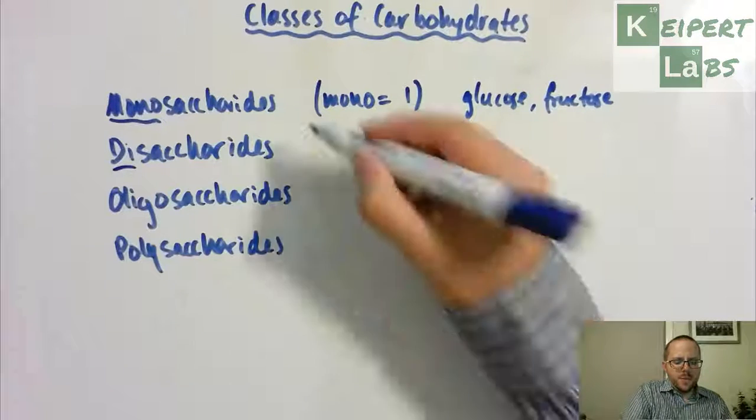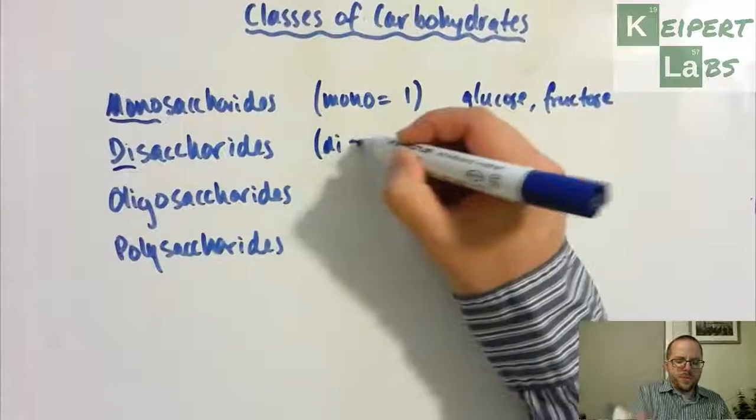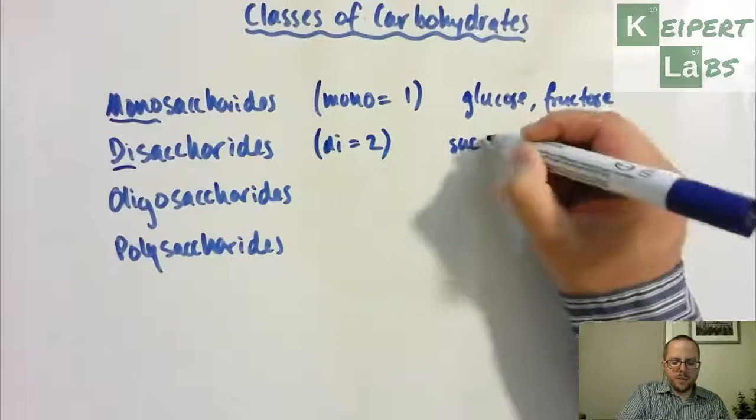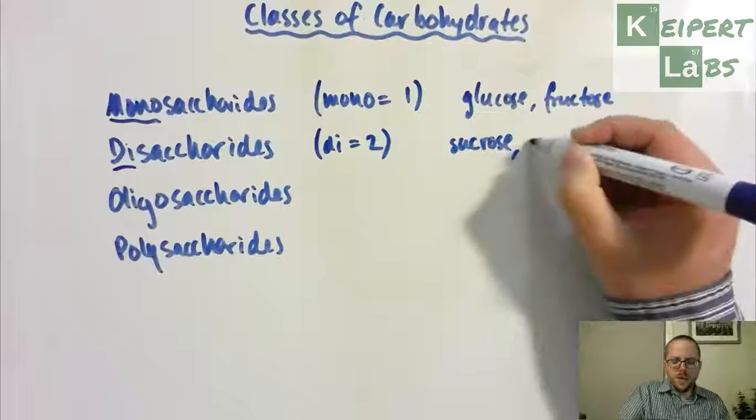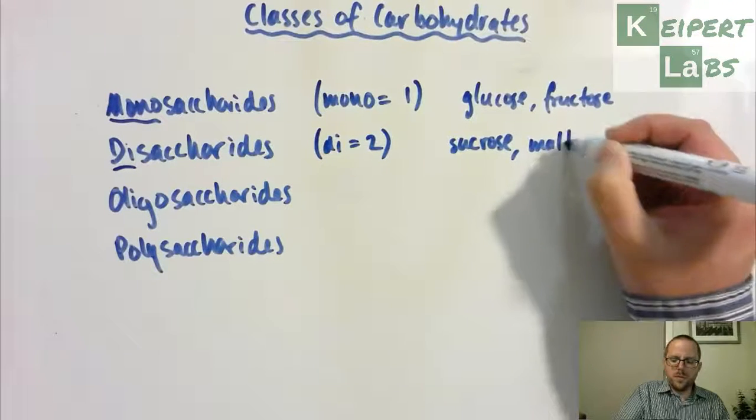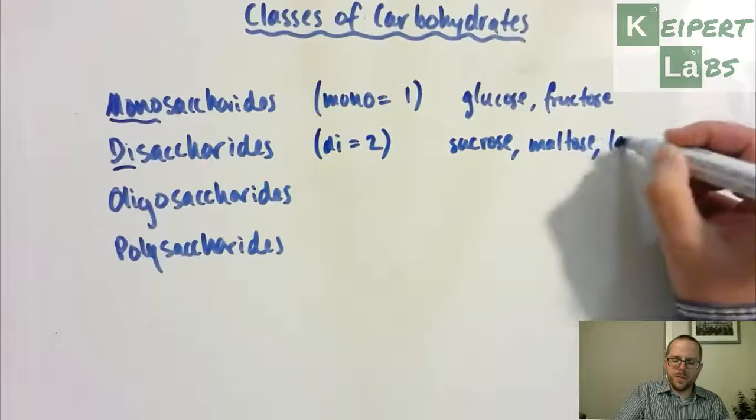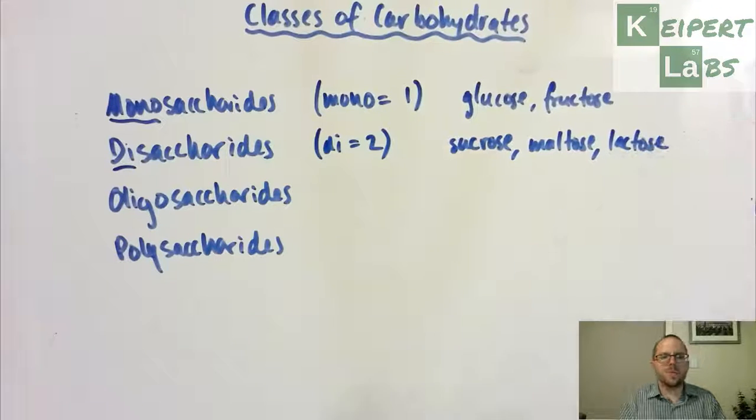Disaccharides, as the name would suggest, di refers to two. Examples include sucrose, maltose, and lactose. Disaccharides are where we take two monosaccharides and connect them together—they're covalently bonded in the center through a reaction called a condensation reaction that we'll look at further.